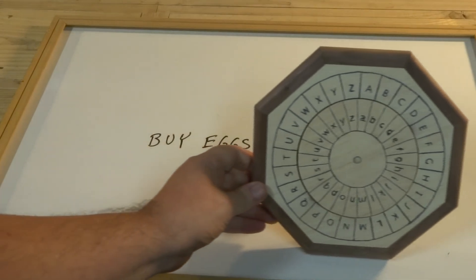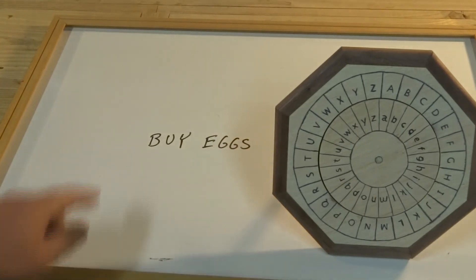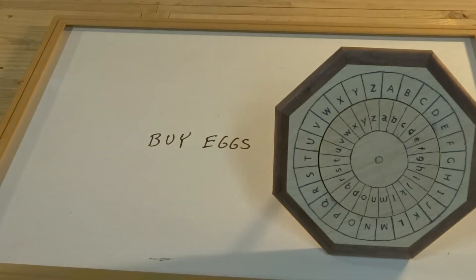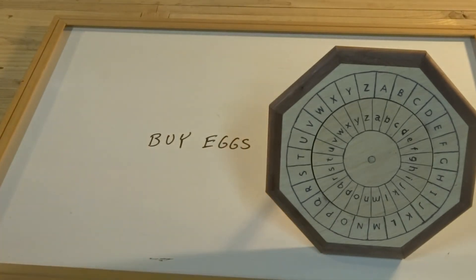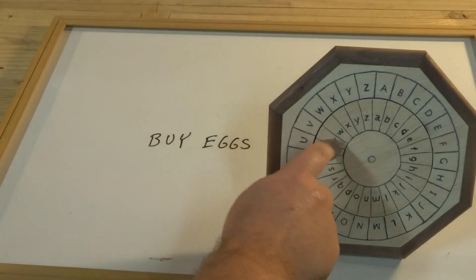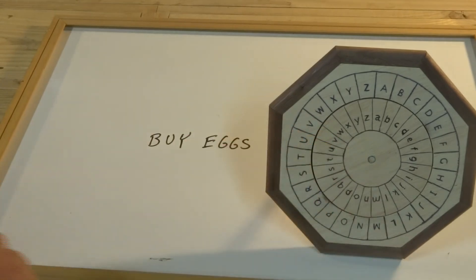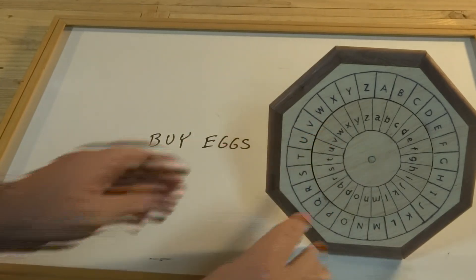Suppose you have a message you want to encode. So we have one here, buy eggs, nice and simple. So the first thing you want to do is you want to set an index on your cipher wheel. Now an index is just a combination of a letter from the outer ring and a letter from the inner ring. They can be anything at all.